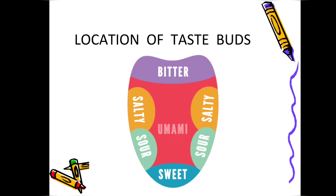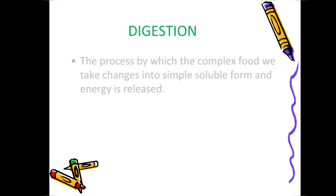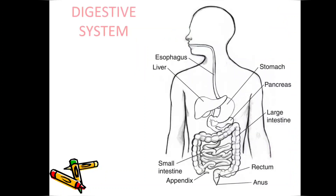In the middle region we can taste umami food items. The process by which the complex food we take changes into simple soluble form and energy is released is called digestion. This is the digestive system of human beings.